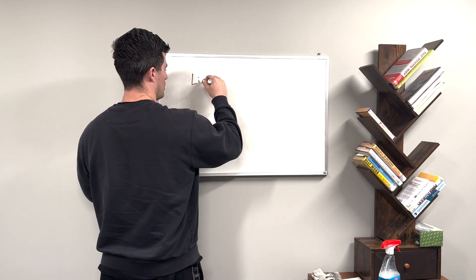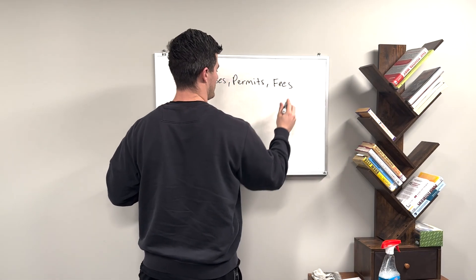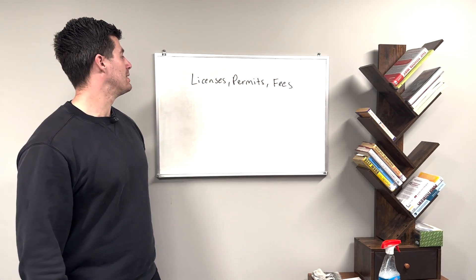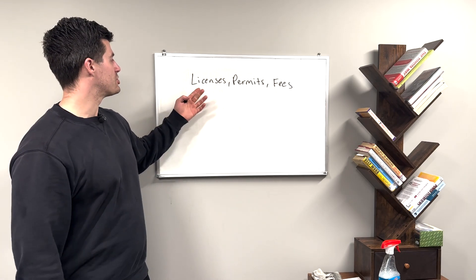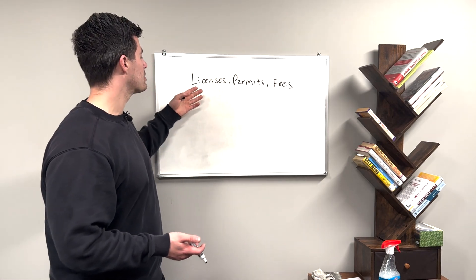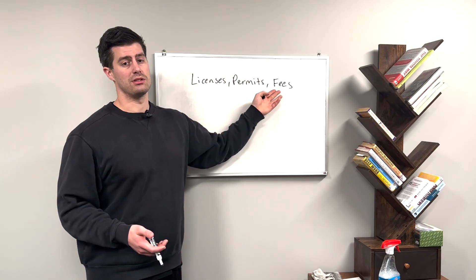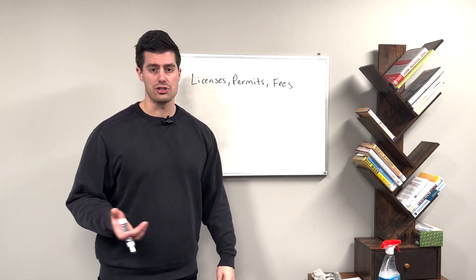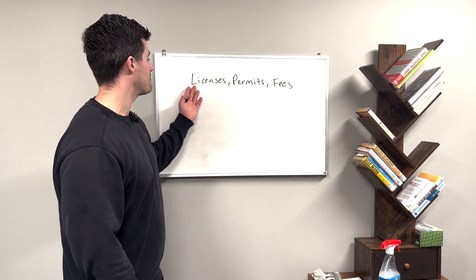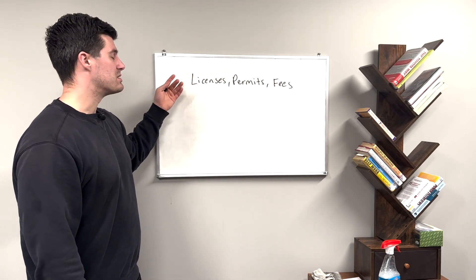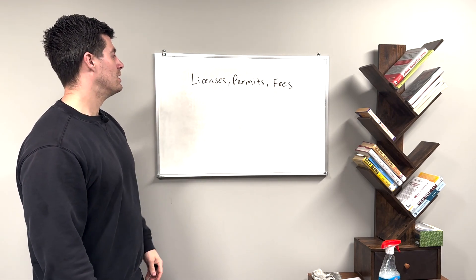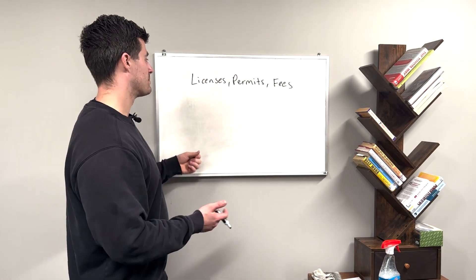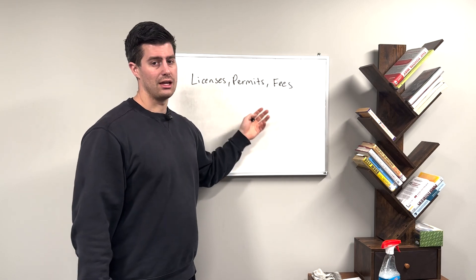Next we have licenses, permits, and fees. If you're a general contractor and have to get a building permit, that's a permit. If you have a trucking company and need to get your vehicle registered, that might be vehicle registration or licenses, permits, and fees. If you pay an annual LLC registration fee to register your business, that's a license, permit, and fee. It's a very miscellaneous and broad category, but a lot of times it's for miscellaneous registration or permit fees that don't fit anywhere else.